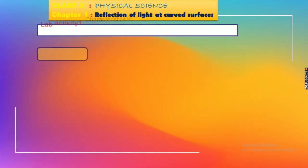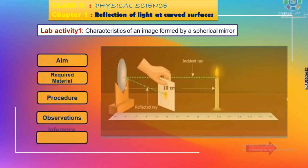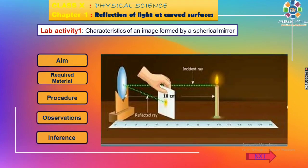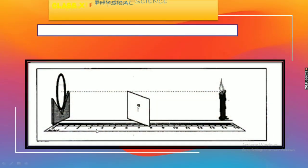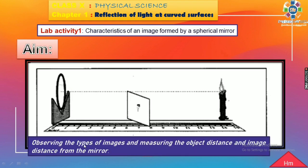In this session, first we have to discuss the aim of this lab activity. The aim is observing the types of images and measuring the object distance and image distance from the mirror. The distance from the mirror to the candle is called object distance, and the distance from the mirror to the screen is called image distance.